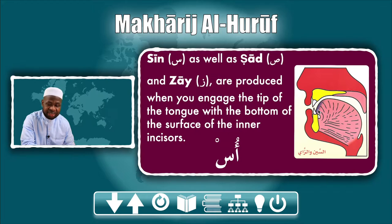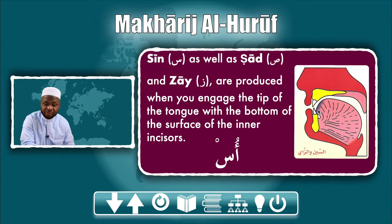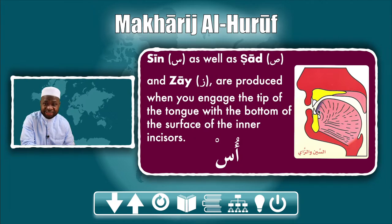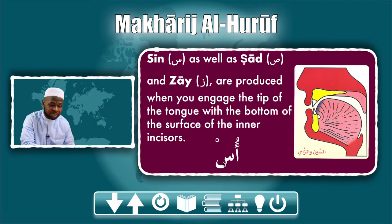Sin and sod are identical with the exception of one characteristic which differentiates them, and that is tafhim and tarqiq. Sod is heavy and sin is flat and thin. So apply sin and put any active letter before it.